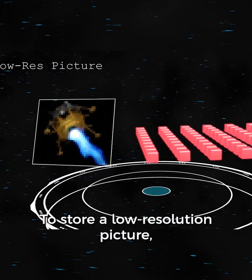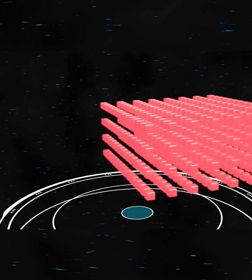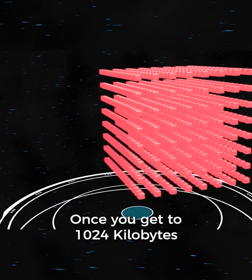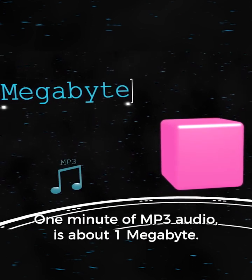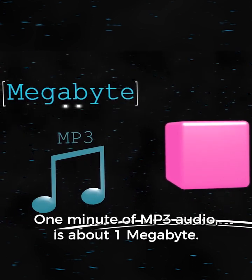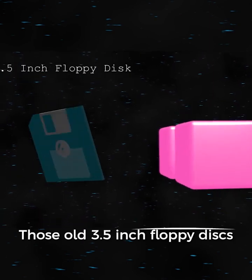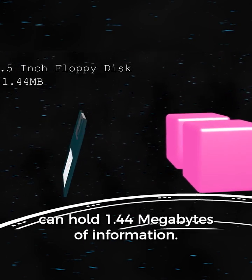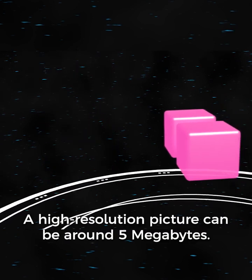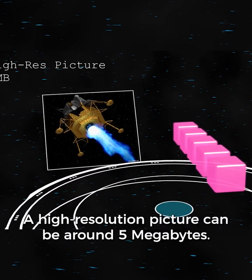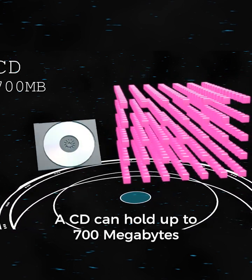To store a low-resolution picture, you're going to need somewhere around 100 kilobytes. Once you get to 1024 kilobytes, we call this a megabyte. One minute of MP3 audio is about 1 megabyte. Those old 3.5 inch floppy disks can hold 1.44 megabytes of information. A high-resolution picture can be around 5 megabytes. A CD can hold up to 700 megabytes.